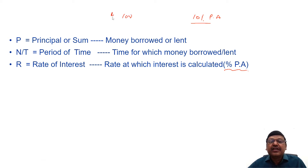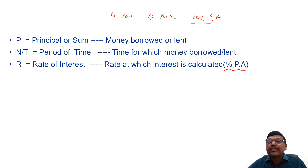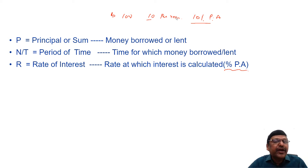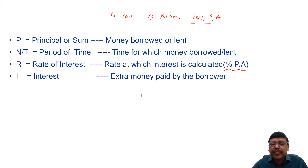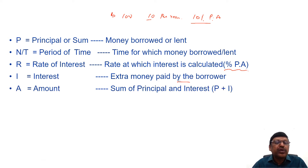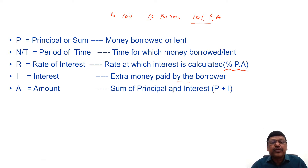For example, if I say 10 percent per annum — percent means per hundred, so for every hundred rupees the interest is 10 rupees; per annum means per year. First of all, what is interest? Interest is the extra money paid by the borrower.